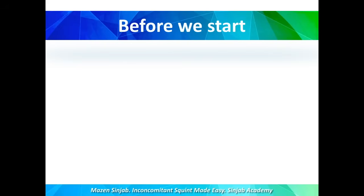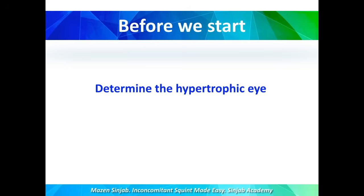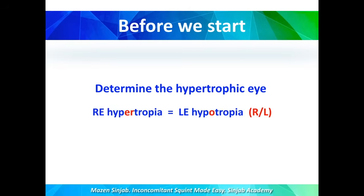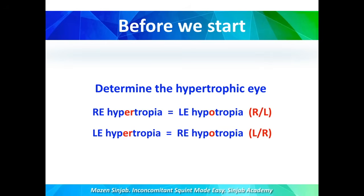Before we start, we have to determine the eye with hypertropia — the hypertropic eye. When we have hypertropia in the right eye, it means we are facing hypertropia in the right eye, and we put a symbol for this: R over L. It means hypertropia in the right eye. When we see hypertropia in the left eye, we write it as L over R. L over R means left hypertropia.